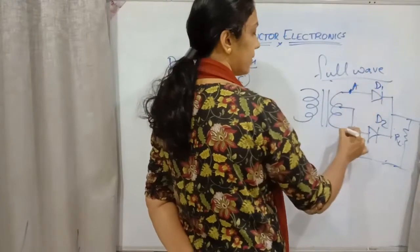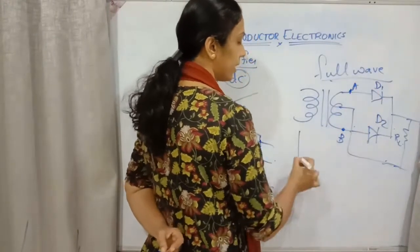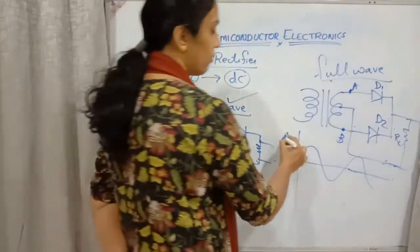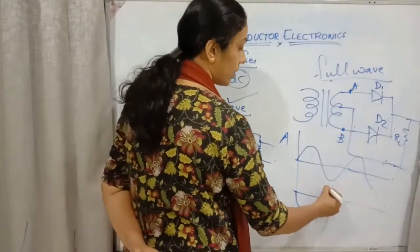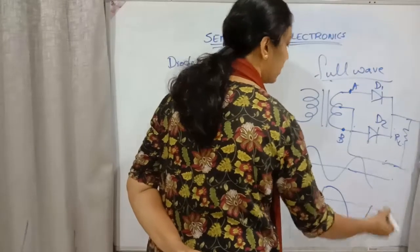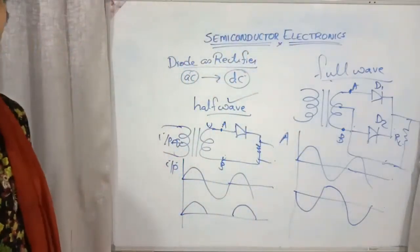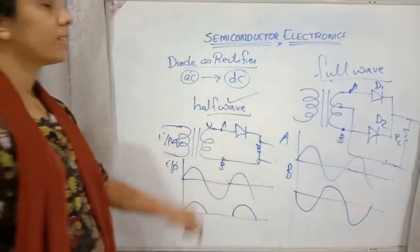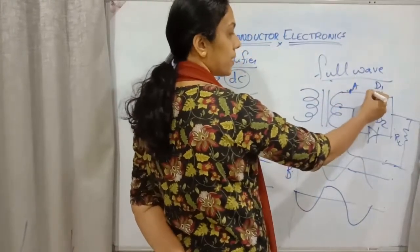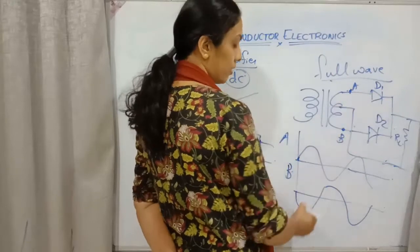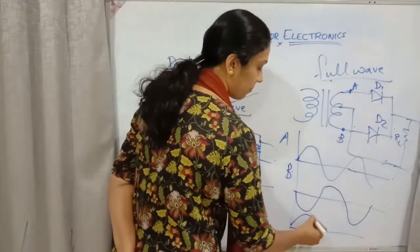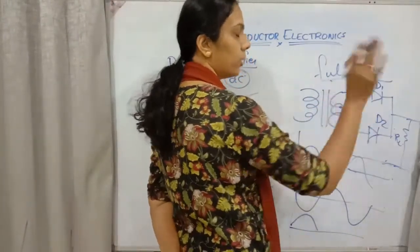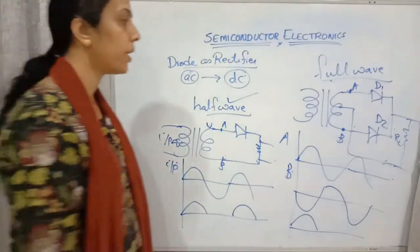Terminal A and terminal B have a phase difference of pi — they are out of phase with each other. When considering the positive half cycle of A, it passes through diode D1 which is under forward bias, giving a positive half cycle output. Then for A's negative half cycle, D1 is under reverse bias so current does not pass.